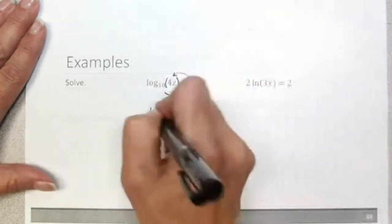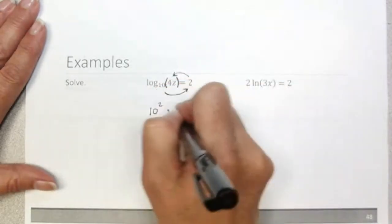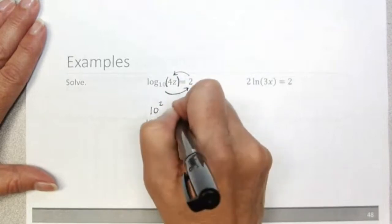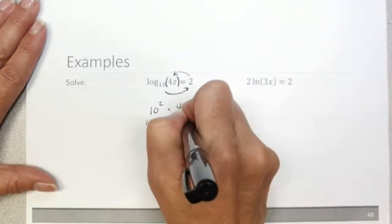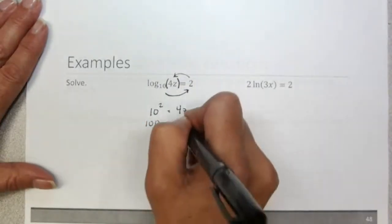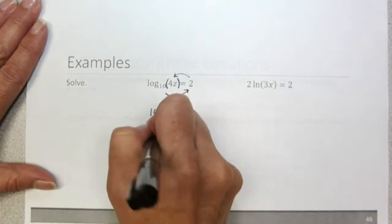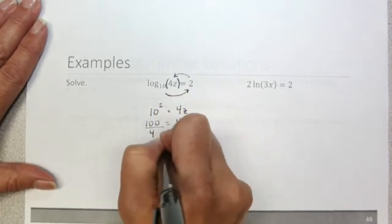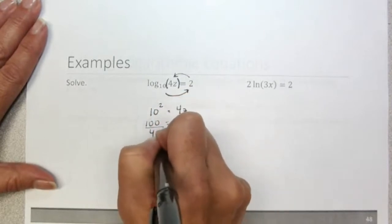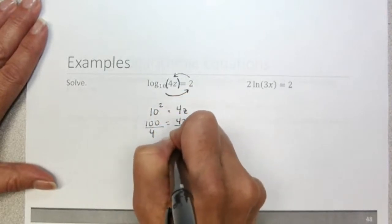10 to the second power is 100, so we simplify: 100 equals 4z. Then to solve for z, all we need to do is divide by 4. So we see that z is equal to 25.